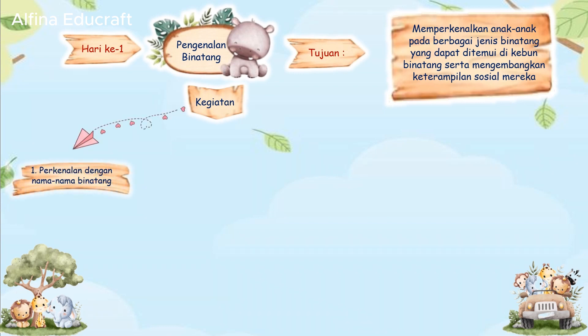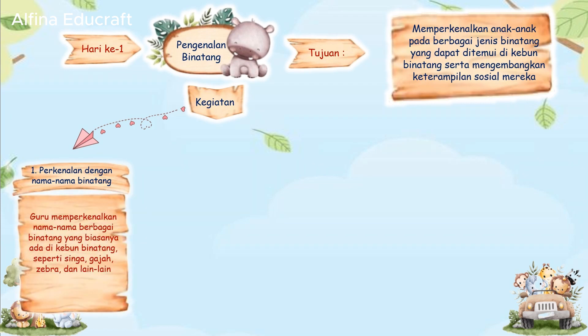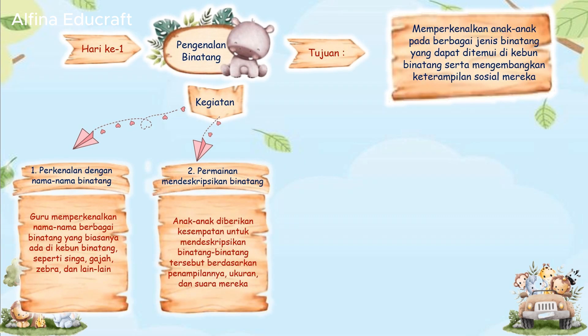Activities. 1: Introduction to Animal Names. The teacher introduces the names of various animals typically found in the zoo, such as lions, elephants, zebras, and others. 2: Describing Animals Game. Children are given the opportunity to describe these animals based on their appearance, size, and sounds they make.